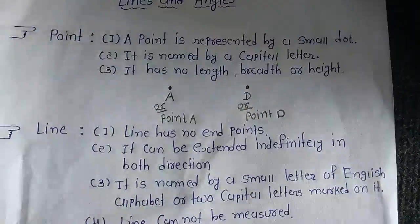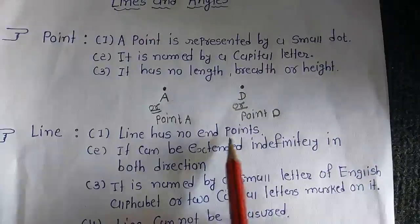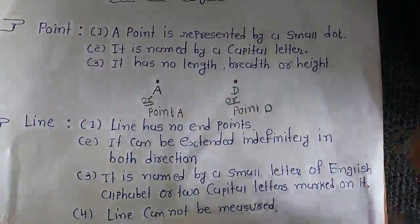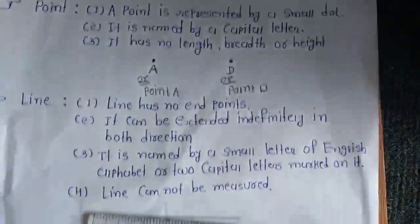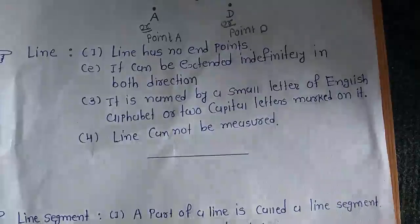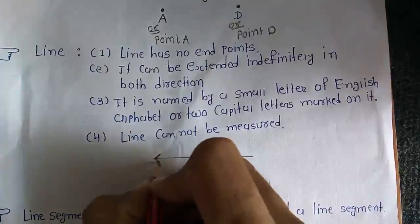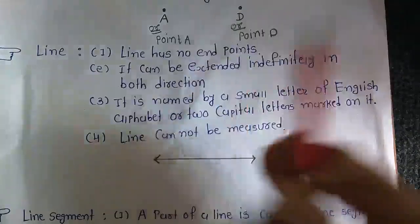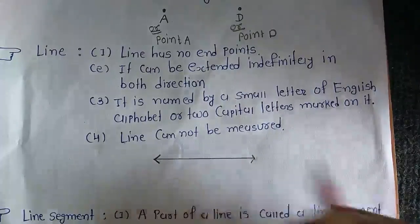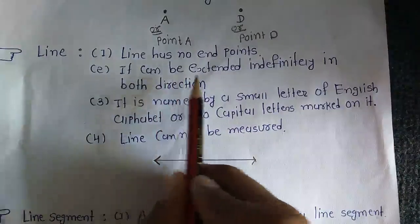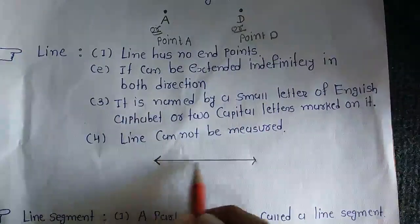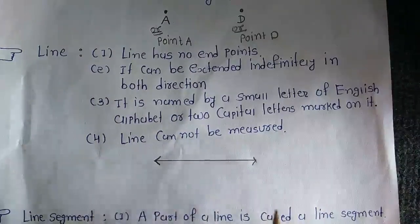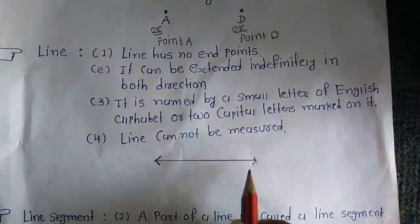Second geometrical concept: Line. Line has no end points. Line ko end points nahi hai. Second point: it can be extended indefinitely in both directions. Ye line hai, woh dono direction mein indefinitely extend hai, uski kuch limit hi nahi hai.